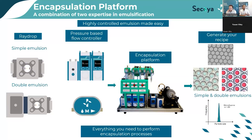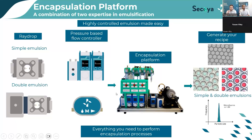A microfluidics setup for double or single emulsion can be hard to handle for people not totally familiar with microfluidics — there is a lot of tubing, connections, pressure controllers, and flow units, which can be time-consuming to set up properly. That is why we developed, in collaboration with Sequoia, the encapsulation platform. The idea is to gather all necessary equipment — pressure controller, flow sensor, the ReDrop device with injection loop, and an optical system — so you can focus on your application rather than on tubing and setup, and consistently achieve high monodispersity and reproducible results.